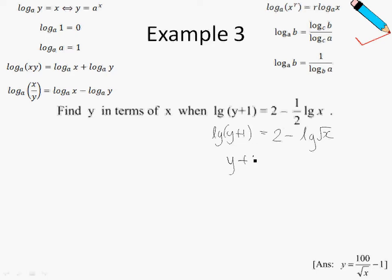Finally, I will want to shift this 1 over to the right-hand side. But before I do that, let me just simplify what I see on the right. So 10 to the power of 2 minus log root x can be broken up to look like this.